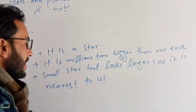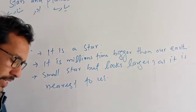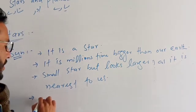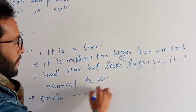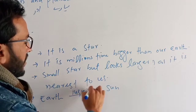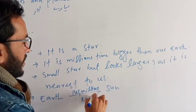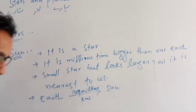The distance between the Earth and the Sun is 149 million kilometers.